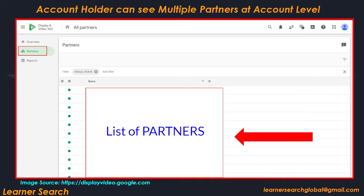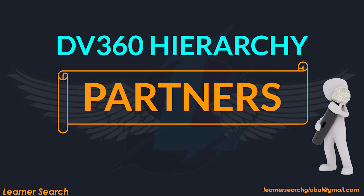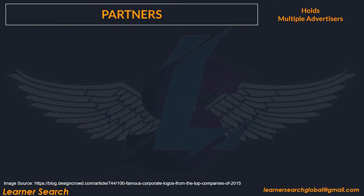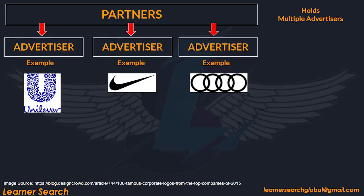The account holder can see multiple partners at the account level. Let's start with partners. Partners represent agencies, trading desks, or any large independent advertisers. A single partner holds single or multiple advertisers. Let's take an example. Let's assume that we created a single partner in the platform. Single partners can hold multiple advertisers. Let's assume we created three advertisers under a single partner — Unilever, Nike, and Audi as examples of advertisers.